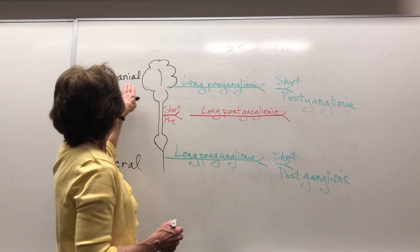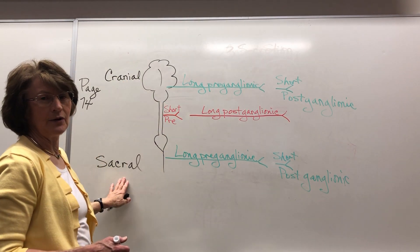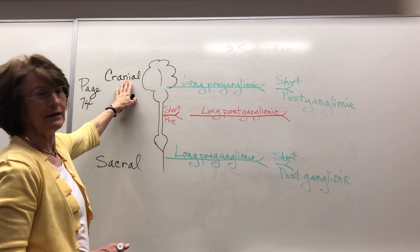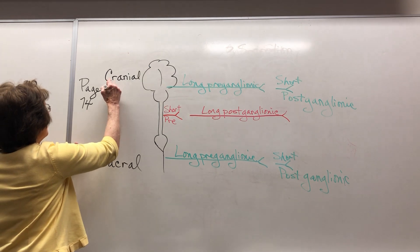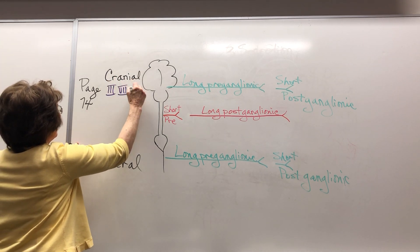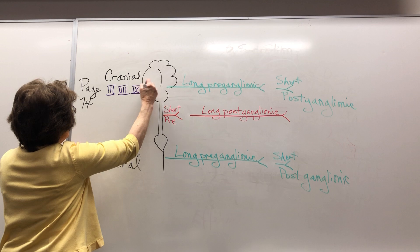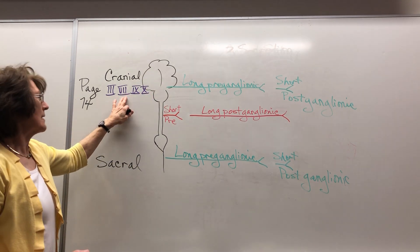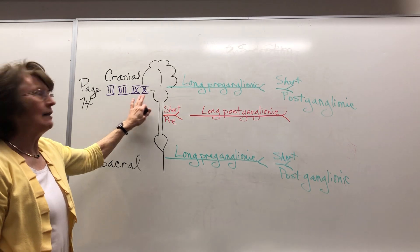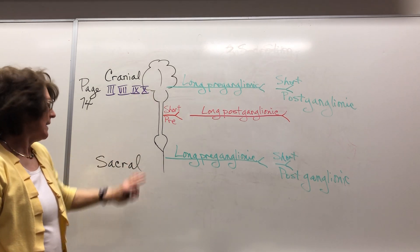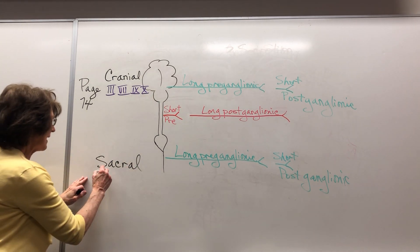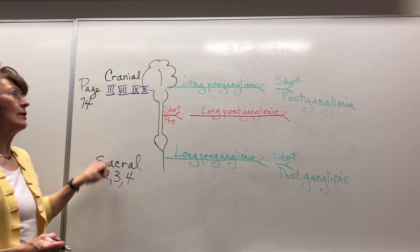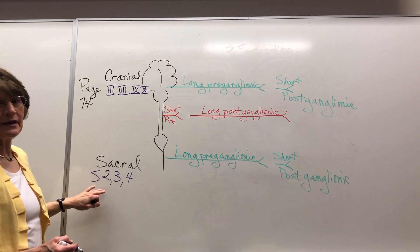As you look, the parasympathetic is called craniosacral. Cranial nerves 3, 7, 9, and 10 — that's oculomotor, facial, glossopharyngeal, and vagus. Down here for sacral, it's S2, 3, and 4. So it's called craniosacral.